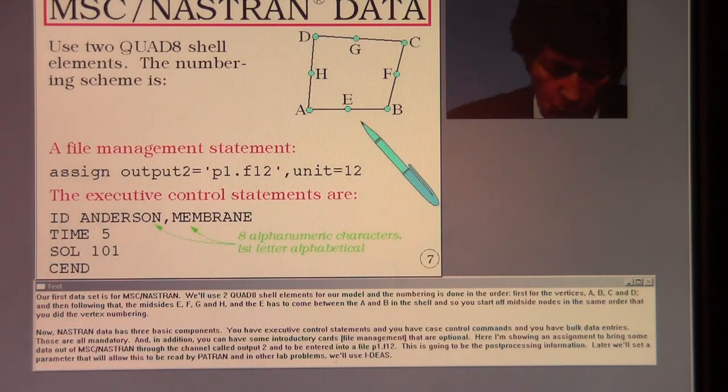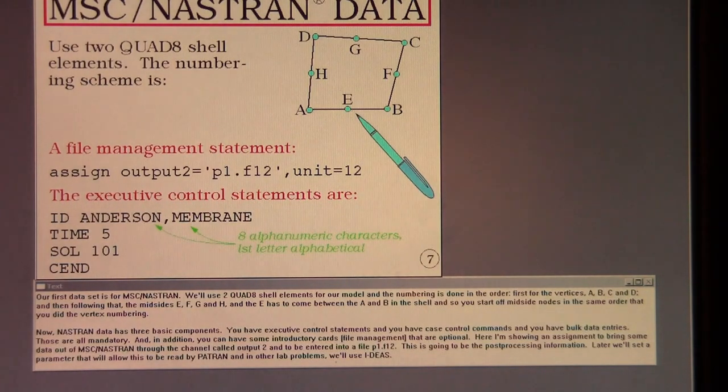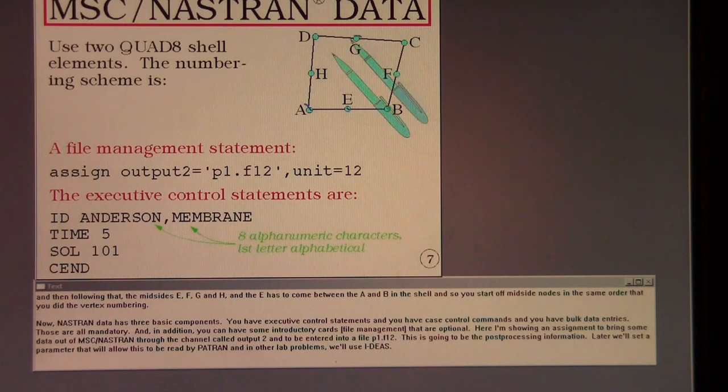Our first data set is for MSC Nastran. We use two quad eight shell elements for our model, and the numbering is down in the order first for the vertices A, B, C, and D. And then following that the mid-sides E, F, G, and H. And the E has to come between the A and B as shown. So you start off the mid-side nodes in the same order that you did the vertex numbering.